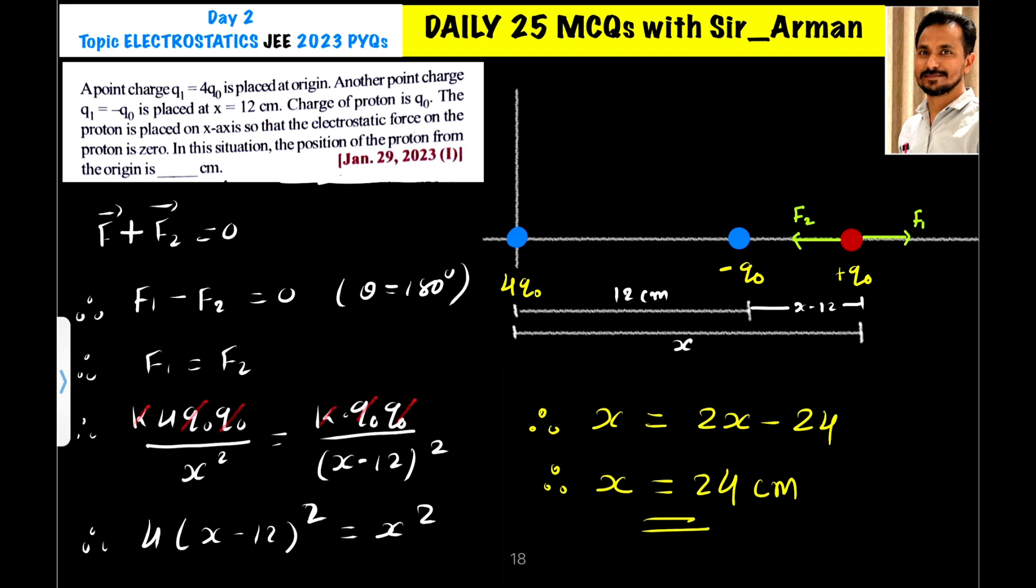The proton is placed on the x-axis so that the electrostatic force on the proton is zero. In this situation, the position of the proton from the origin is what we need to find.